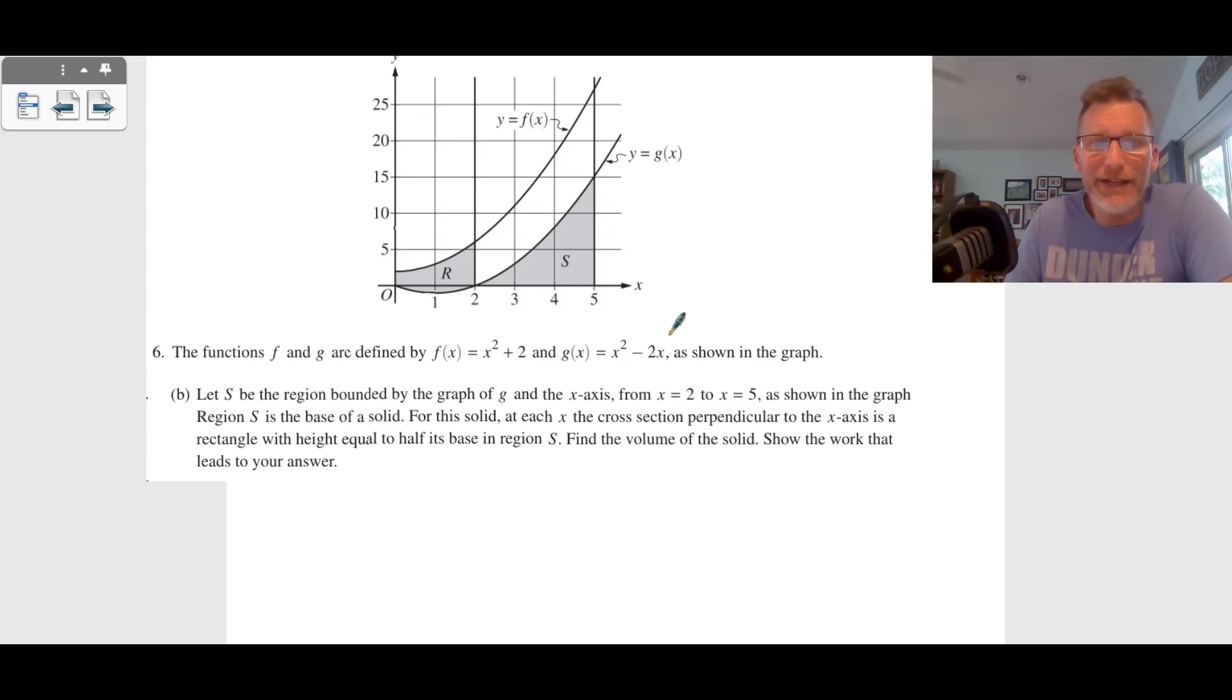Then they asked for region S. It says from two to five, it's the base of a solid and its cross sections perpendicular to the x-axis, which means it's going to be dx. It's a rectangle with its height equal to half its base. So our base is going to be this much and our height is going to be half of this much, and we have a bunch of rectangles.